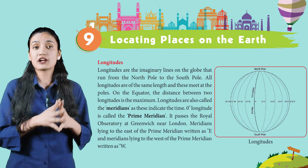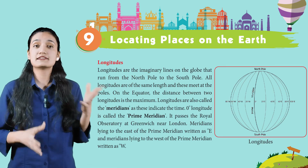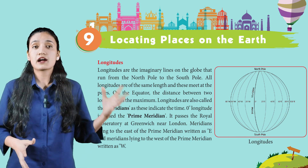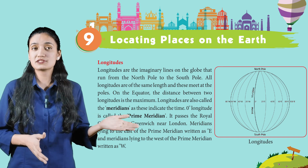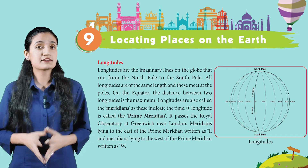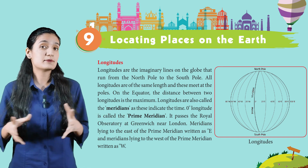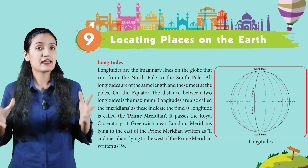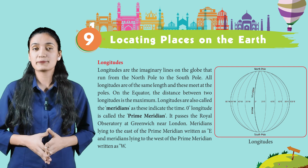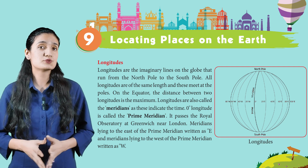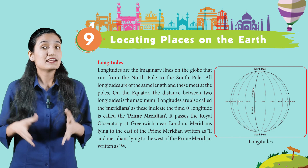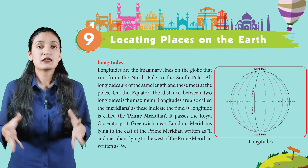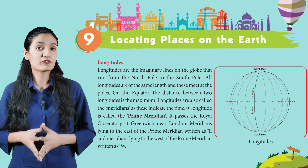Now, longitudes. Longitudes are the imaginary lines on the globe that run from the North Pole to the South Pole. All the longitudes are of the same length and these meet at the poles. On the equator, the distance between two longitudes is the maximum. Longitudes are also called meridians, as they indicate the time. Zero degrees longitude is called the Prime Meridian.